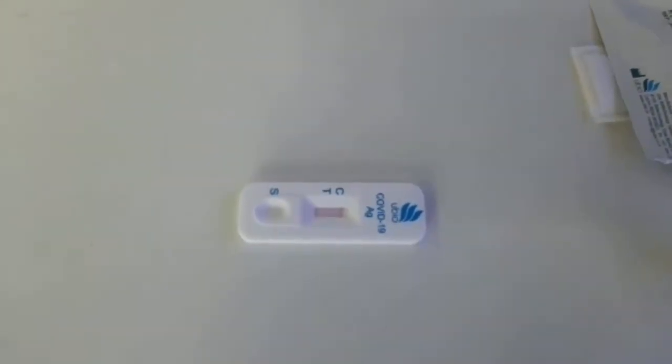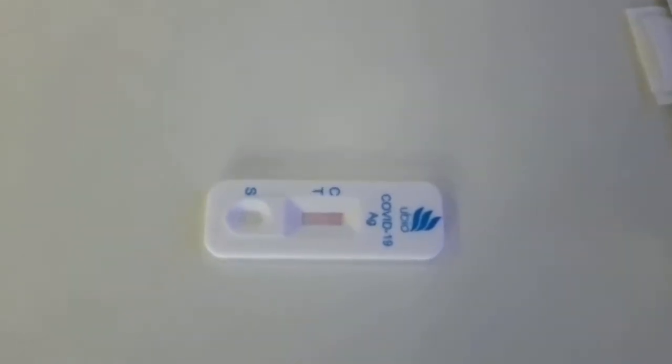Color bands at both positions, control line C and test line T, indicate that coronavirus antigen has been detected and the result is positive for antigen.